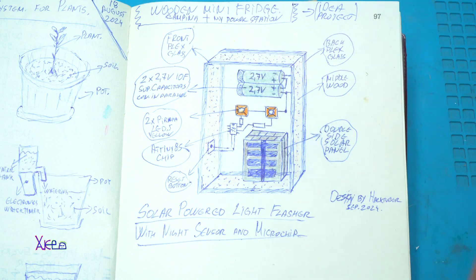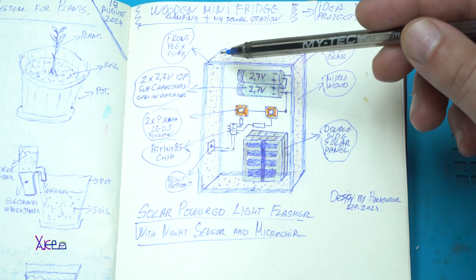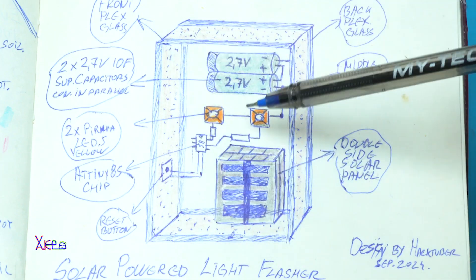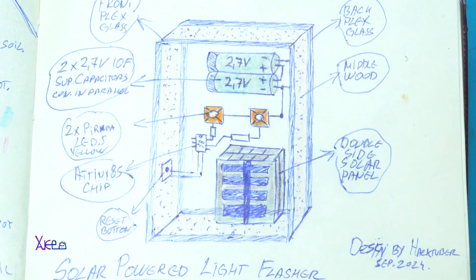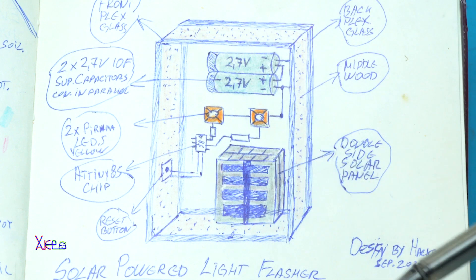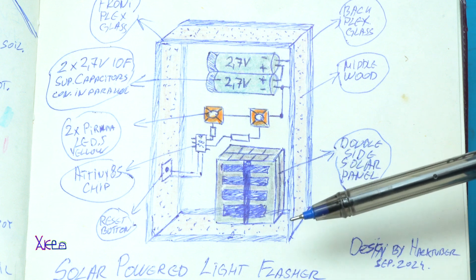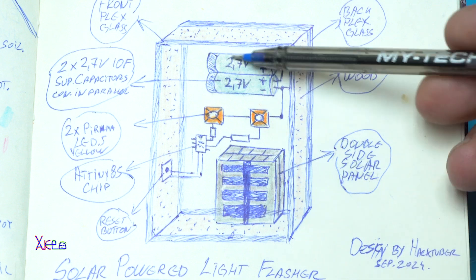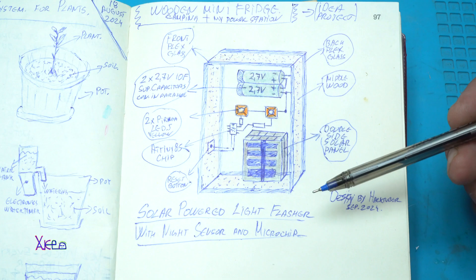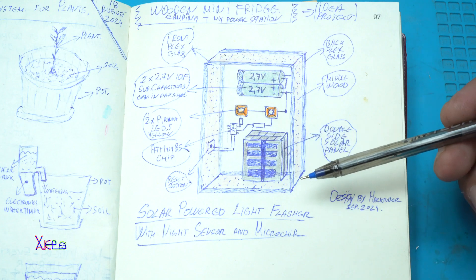Okay, we have a front plexiglass, a back plexiglass. In the middle we have a wooden frame as you can see. I am going to use two solar panels, that mean double side from two ways the super capacitors will be charged through the solar panels. I am going